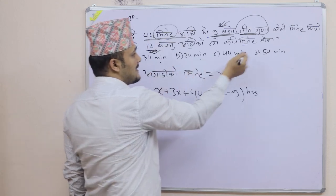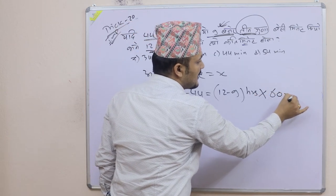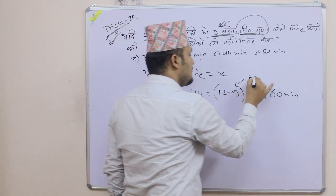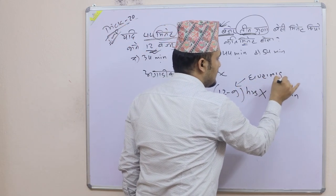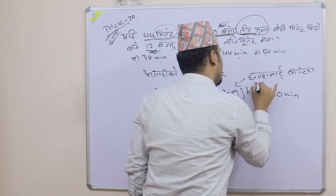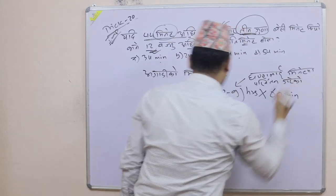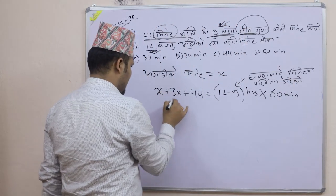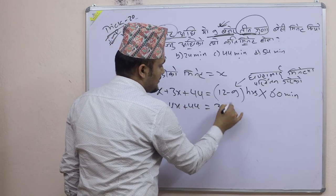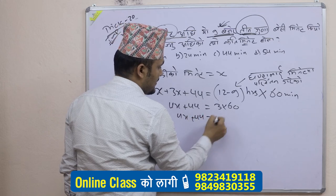Before we start out, we start out into the 60 minutes. So this is a minute. 4x plus 44 equal to next, 4x plus 44 equal to 34.